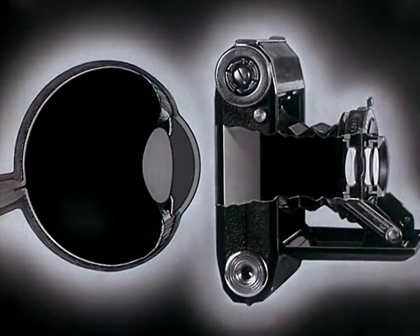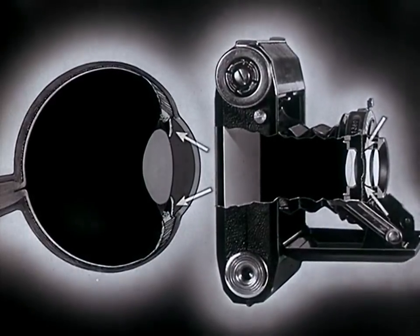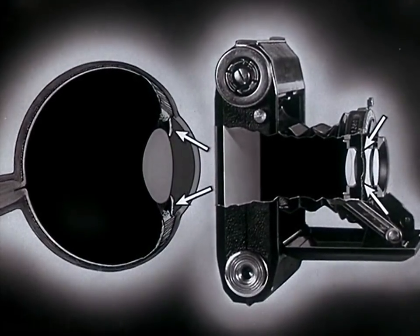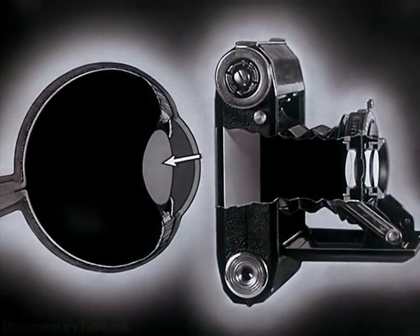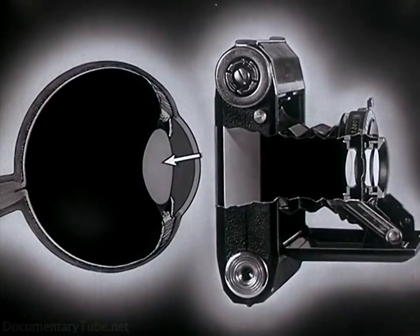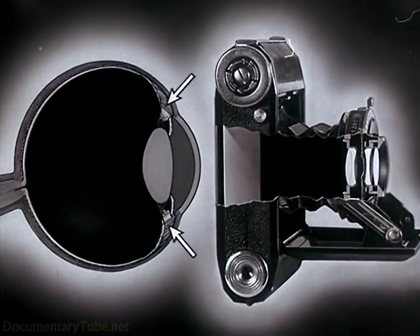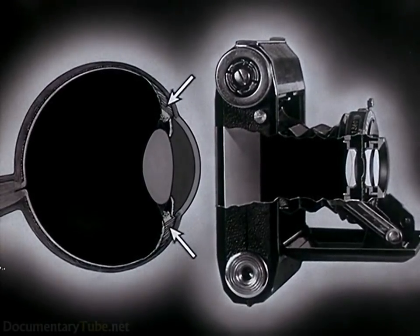The human eye, like a miniature camera, has an iris to regulate the amount of light coming in and a lens. The shape of the lens of the eye can be changed by tiny muscles to suit the distance at which it has to work.